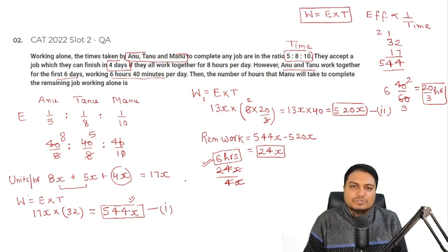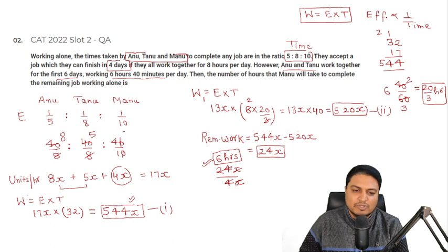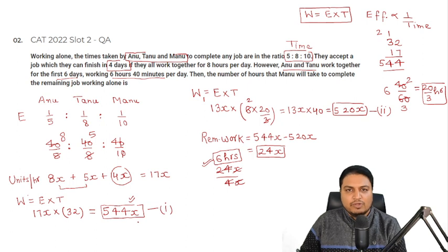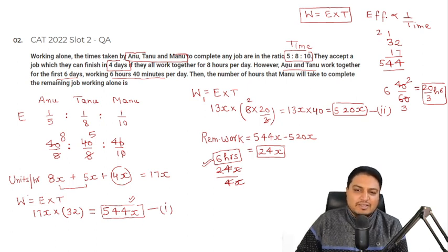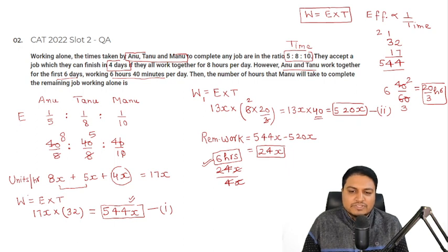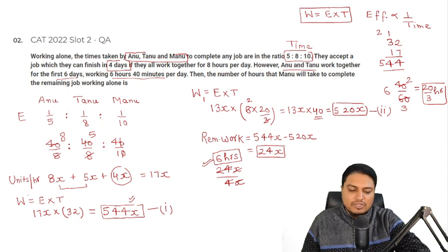Let me quickly recap: First, find efficiency ratios as 8:5:4 from time ratio 5:8:10. Total work = 17x × 32 = 544x units. Annu and Tannu together have efficiency 13x; working 20/3 hours/day for 6 days = 40 hours, so they complete 520x units. Remaining work = 24x units. Mannu makes 4x units per hour, so Mannu takes 6 hours. That's the answer.